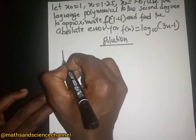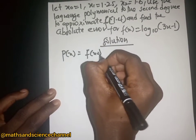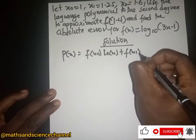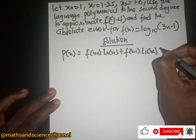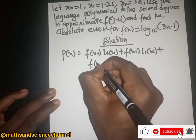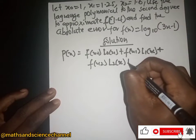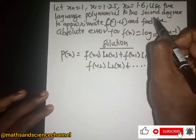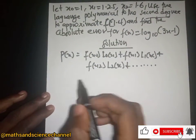The Lagrange polynomial is given by f(x₀)·L₀(x) + f(x₁)·L₁(x) + f(x₂)·L₂(x). The question says to the second degree, so this is where we stop.